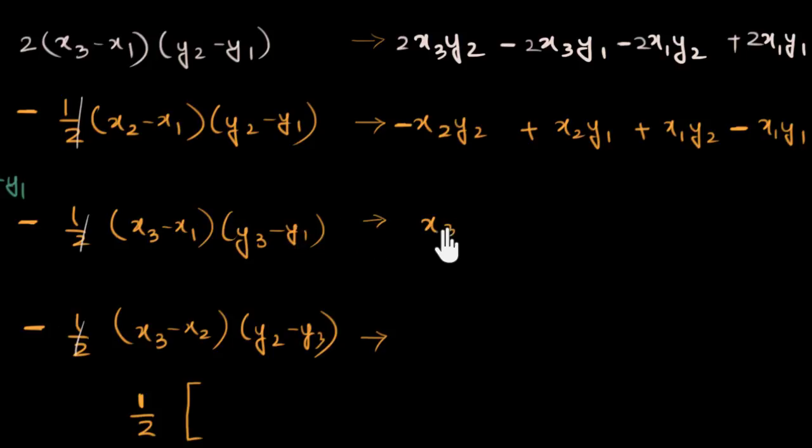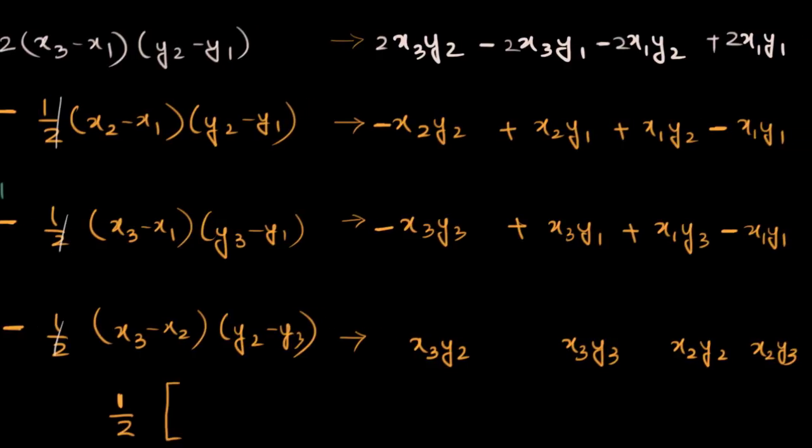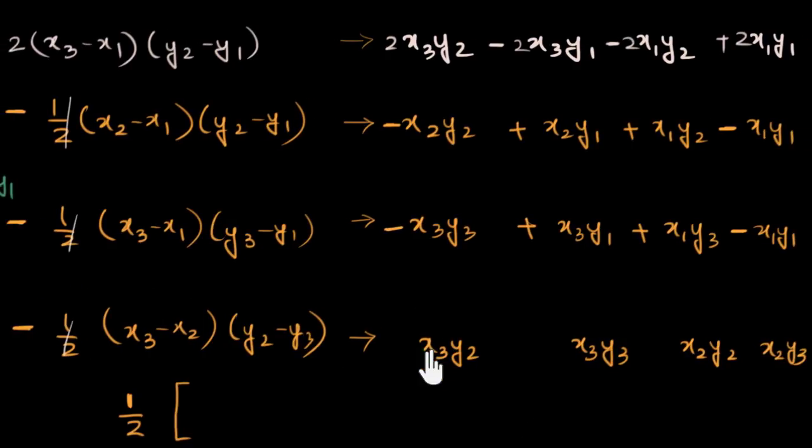So x3 y3, x3 y1, x1 y3 and x1 y1. There it is. And again it's going to be minus plus plus minus. Similar story here, x3 y2, x3 y3, x2 y2 and x2 y3. And again it's minus plus plus minus.